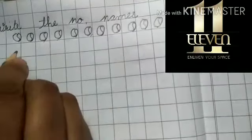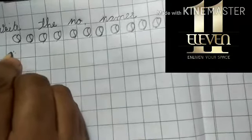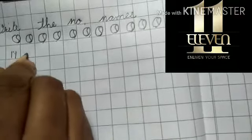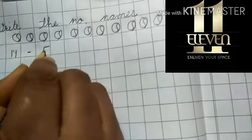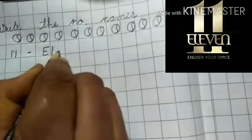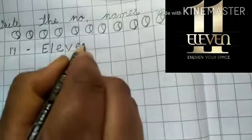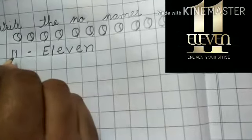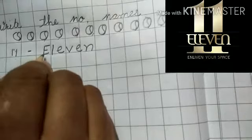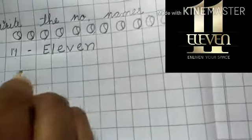So you write the 11 number names. Write the 11 number in bracket, 11 dash. First letter always capital, E L E V E N. You read with me, 11 dash E L E V E N.